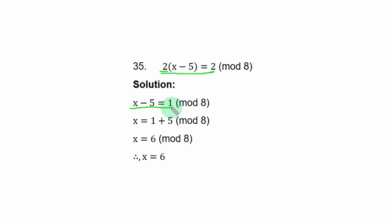Then you can collect like terms by transferring minus 5 to the right-hand side. When you do that, you are left with x equal to 1 plus 5 modulo 8. And when you add, you have x equal to 6 modulo 8.